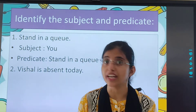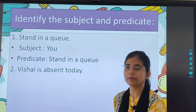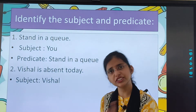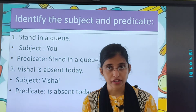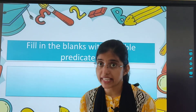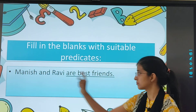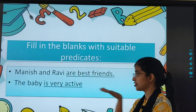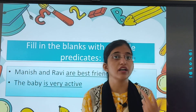Second example: 'Vishal is absent today.' Now comes the next exercise — fill in the blanks with suitable predicates. For example, 'Manish and Ravi ___.' Answer: 'Manish and Ravi are best friends.' 'The baby ___.' Answer: 'The baby is very active.' All these blanks are filled with predicates. These types of questions will come in your question paper.